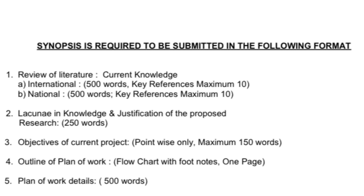Next comes objectives of the current project. These should be mentioned clearly and point-wise only, and should not be more than 150 words. After that, outline of plan of work. This should be made like a flow chart — first mention what aspect of your research you carry out, then the next aspect, and so on till the end. It is how your research is going to proceed within the stipulated time, and should be of one page.